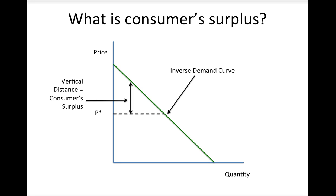Another way to think about it is that since I have to spend less than I was willing to on one product, I have money left over to buy other things or to save, and that makes me better off as well. Either way, for each unit of a good that I buy, my consumer surplus is just the difference between what I'm willing to pay and what I have to pay, which is the vertical distance between the inverse demand curve and the price for that unit.